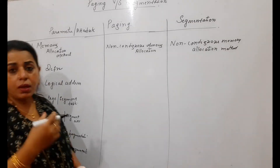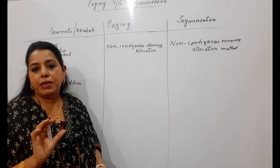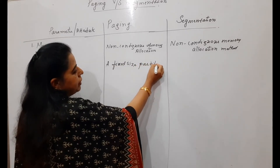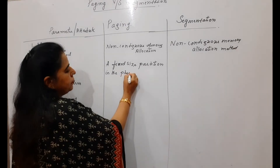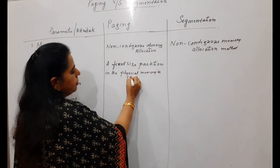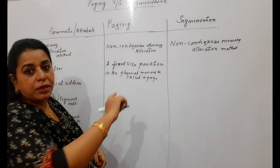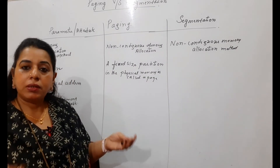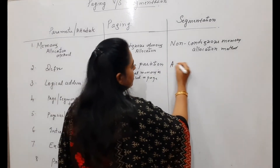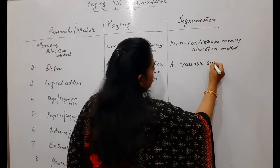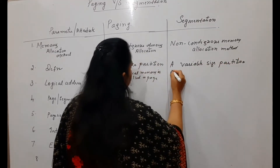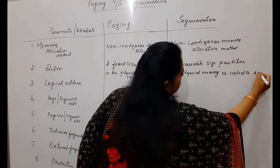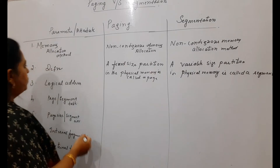For the definition, paging is based on pages — a fixed size partition in the physical memory is called a page. Whereas for segmentation, a variable size partition is called a segment. A program consists of various segments, and each segment will be of different size.